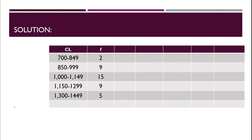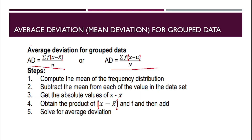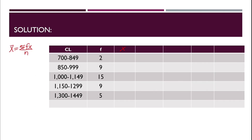To compute the mean of the frequency distribution, use the formula: mean equals summation of f times x over n. We have to find the class mark. The class mark or midpoint x is found as follows: for the first class, 849 plus 700 divided by 2 equals 774.5.